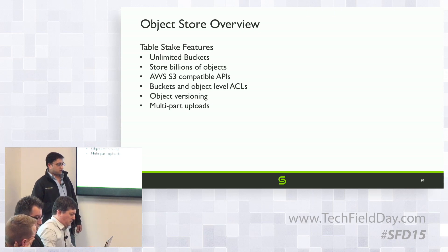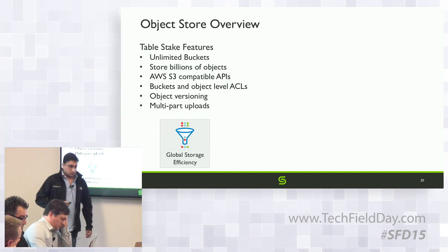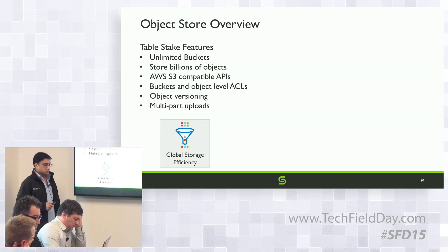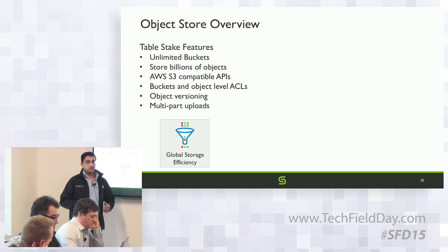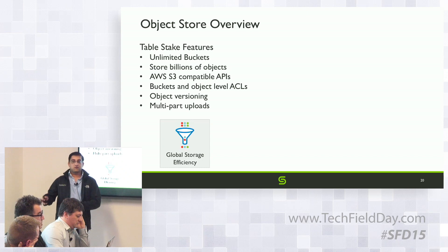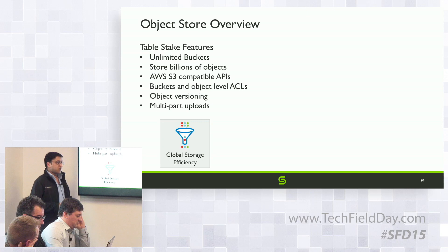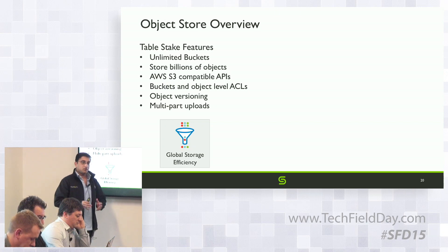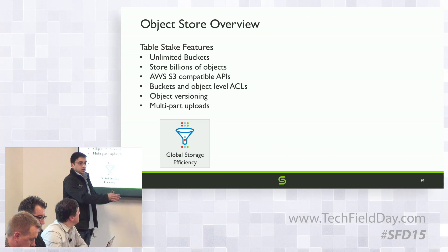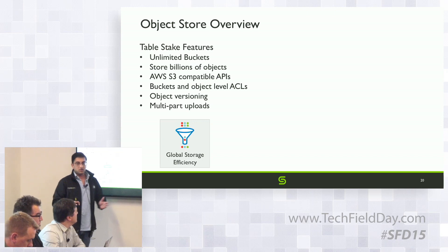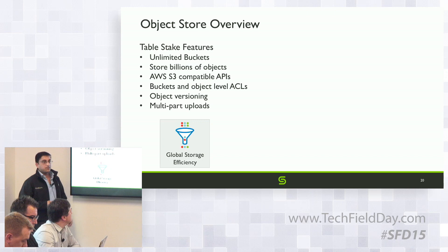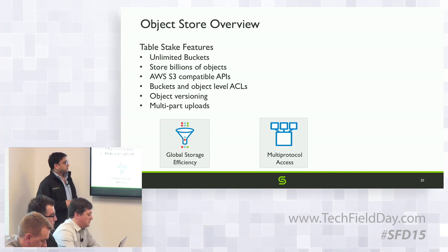A key differentiator is that we support global dedupe, compression, erasure coding, and encryption for our object store. Imagine using QoCity for both backup and home directory purposes. We globally dedupe data across backup data, file share data, and object data, giving you global efficiency across the entire QoCity appliance.